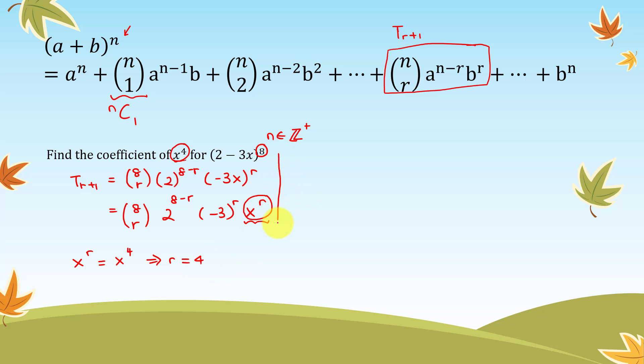We go back to the formula for t r plus 1. Over here will become 4 plus 1, so t5. This one will become 8C4, 2 to the power of 8 minus 4, negative 3 to the power of 4, x to the power of 4 as well.